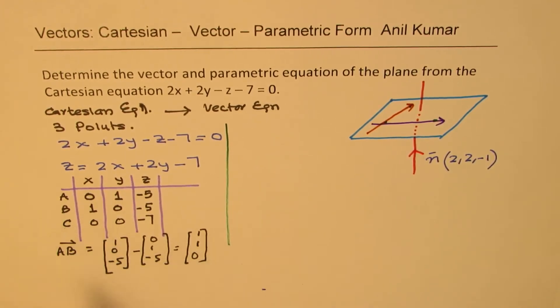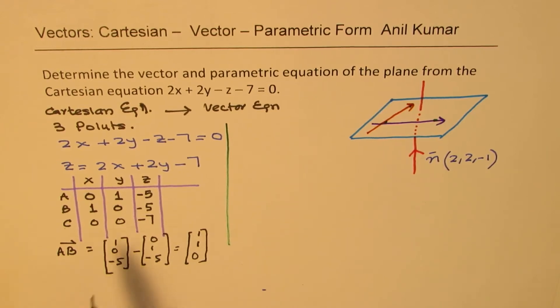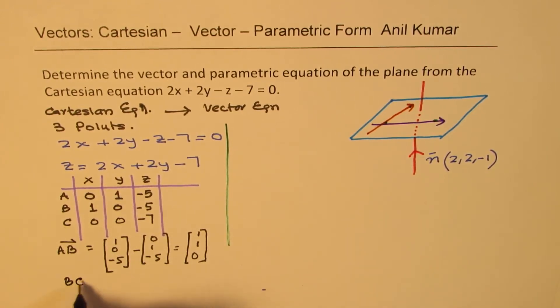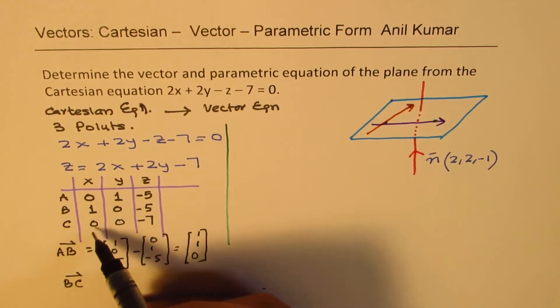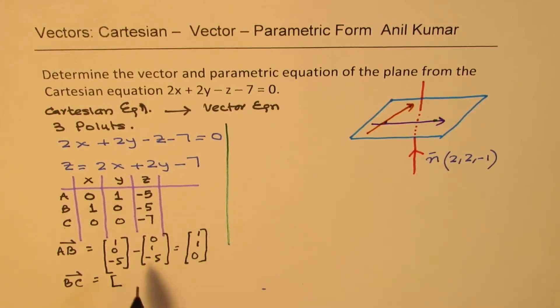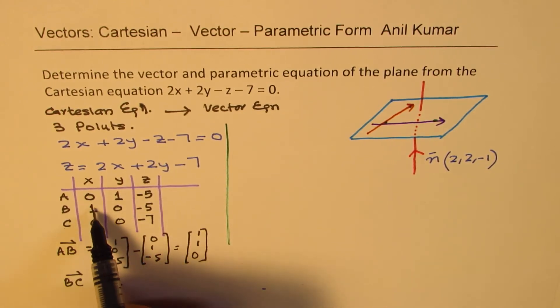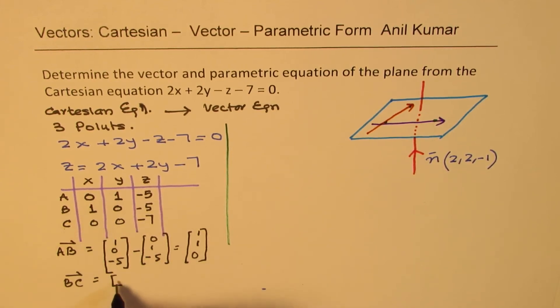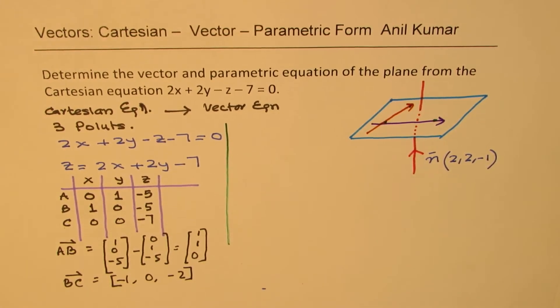Similarly, we can find what b to c is. So, b to c will be equal to, we can do from here, 0, minus 1. So, we could also write this in this form. Since I have lesser space here, so I'll just go horizontal this time. So, b to c is c minus b. So, this minus this gives me minus 1, that gives me 0, and this gives me minus 2. So, I get two directions.